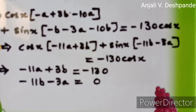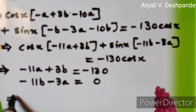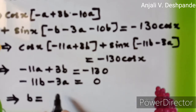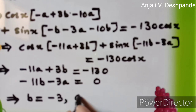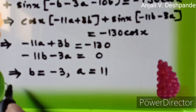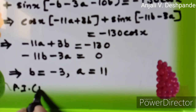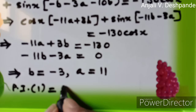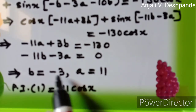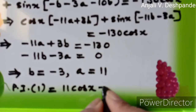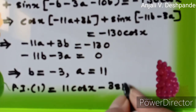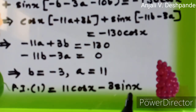If we solve these equations, we will get the value of b as minus 3 and a as 11. Therefore, the particular integral of the first function is PI₁ equal to 11 cos x minus 3 sin x. We are substituting the values of a and b back into the trial solution. This is the particular integral of the first function.